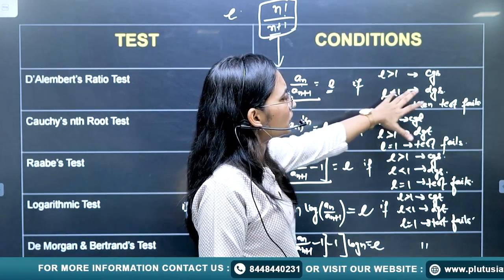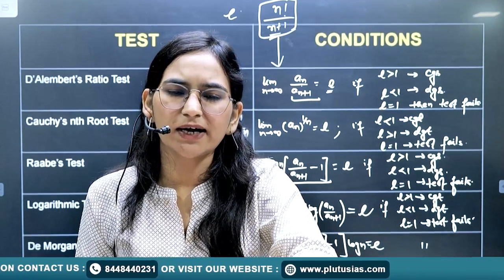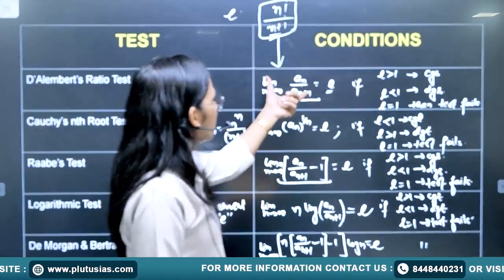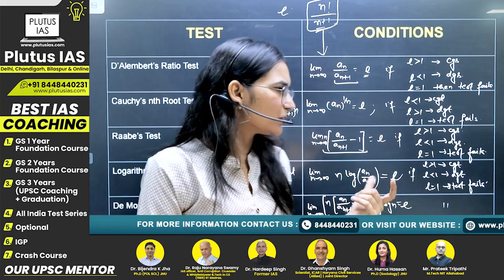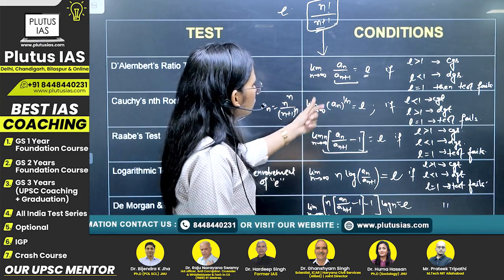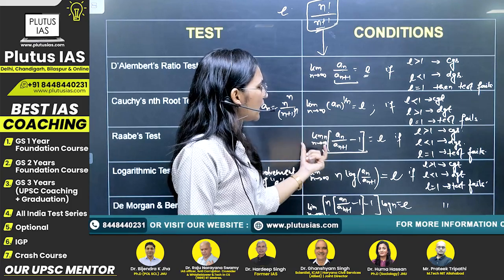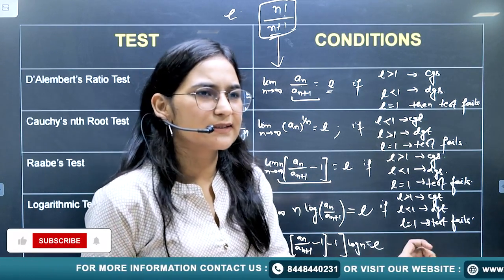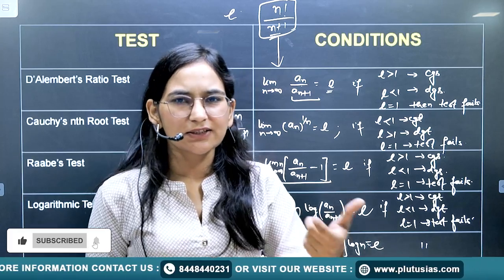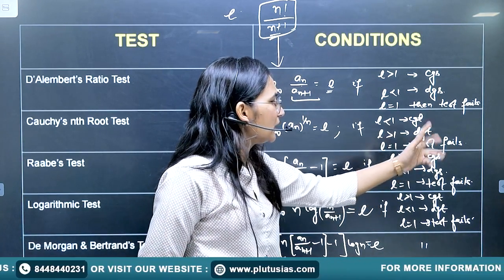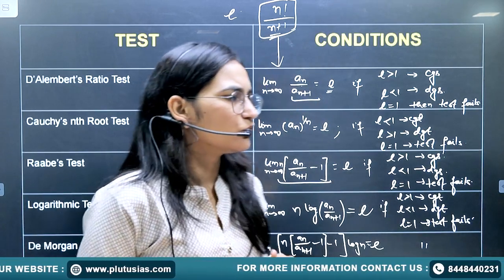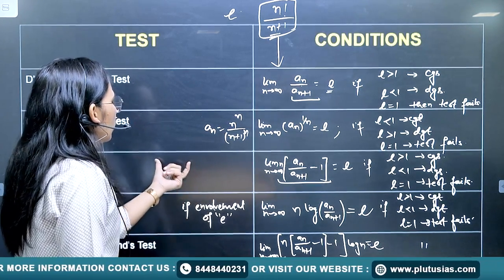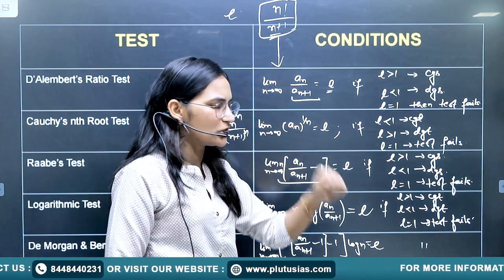When D'Alembert's Ratio Test fails (l = 1), we apply Raabe's Test. Take the ratio a_n / a_{n+1}, subtract 1, multiply by n, and take the limit: limit as n → ∞ of n(a_n / a_{n+1} − 1) = l. If l > 1 the series is convergent, if l < 1 it is divergent, and if l = 1 the test fails again. Note that Raabe's Test is applicable only when e is not involved in the series.